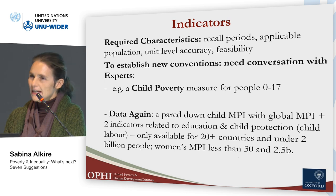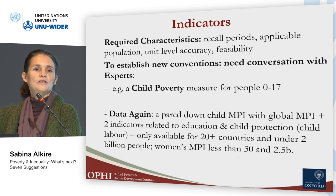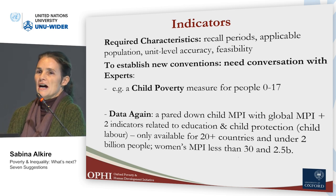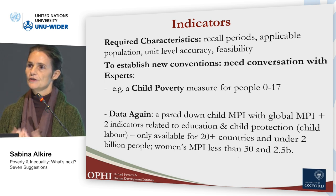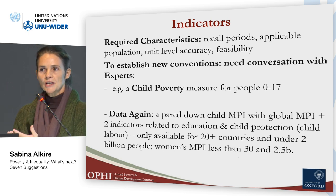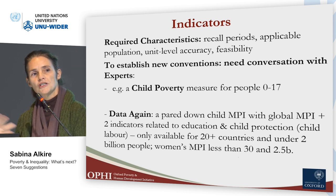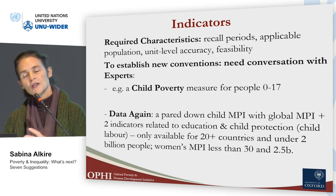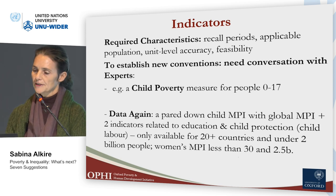There is also a need for better data information. Looking across all Demographic and Health Surveys and Multiple Indicator Cluster Surveys, it's hard to find the right combination of indicators to make a good child poverty measure including child labor and cognitive development dimensions — we can do so for just over 20 countries and under 2 billion people. For a gendered measure or a women's measure, fewer than 30 countries covering 2.5 billion people. We need systems to identify what is jointly available and what are better indicators.